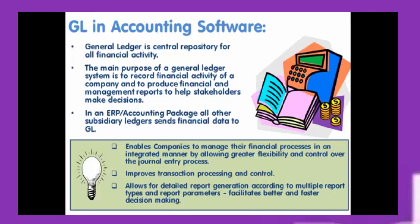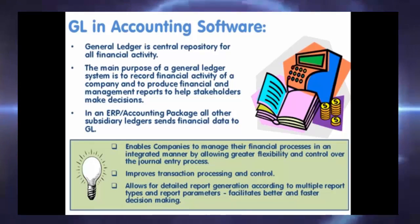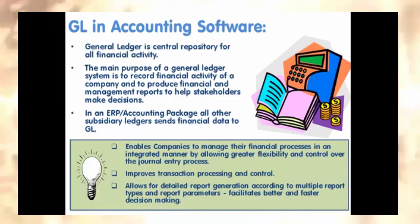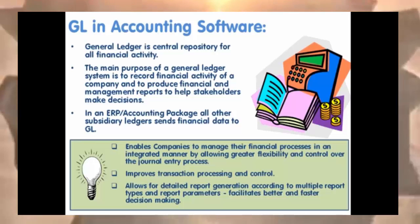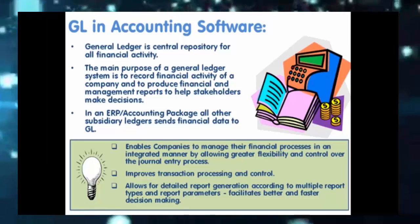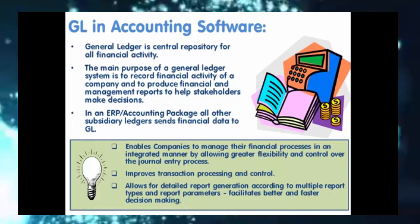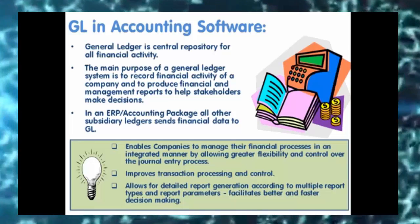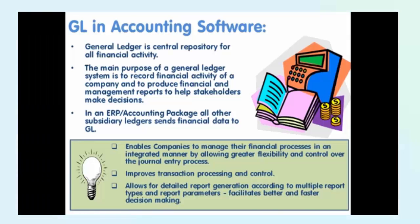Income statements, balance sheets, and statements of cash flow are standard reports needed by management to judge business progress, and these reports can be built using the trial balance created in general ledger. In an ERP or automated accounting package, all other subsidiary ledgers — also known as modules — send financial data to the general ledger. Data from different modules can be imported automatically using integrations with sub-ledgers. General ledger validates the financial data and updates the balances to the respective accounts.